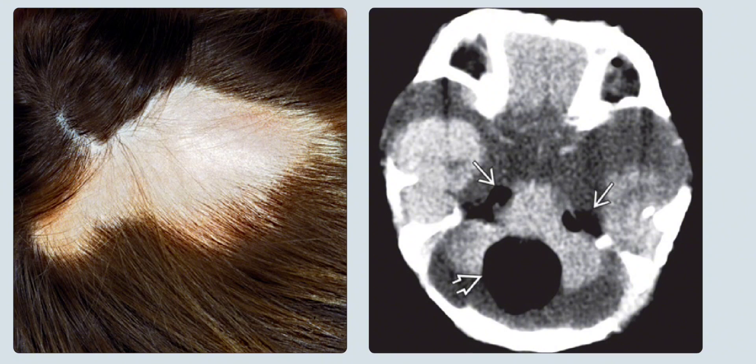The nevus overlies the lipoma and is the hallmark of encephalocraniocutaneous lipomatosis. On the right is the axial non-enhanced CT scan in a 2-year-old child with encephalocraniocutaneous lipomatosis, showing focal lipomas in both cerebellopontine angle cisterns and the cisterna magna.